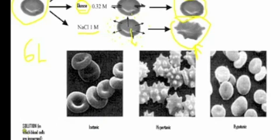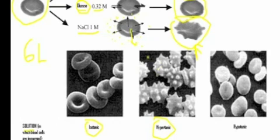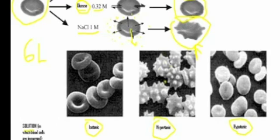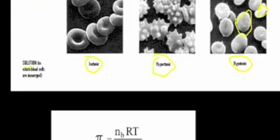To summarize the three solution types: in an isotonic solution (like a glucose example), the water balance is equal and the cell is normal. In a hypertonic solution, there are many more particles outside, so water exits the cells, giving them a shrunken, irregular shape. In a hypotonic solution, water enters the cells and eventually makes them burst — the cell shown may already have been lysed and therefore dead.